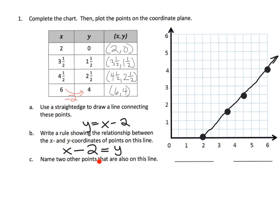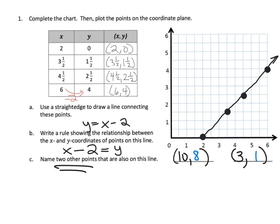We also could have said: start with the y and add two to get x — that would be fine as well. Now let's name two other points that are on the line. We can choose any value for x, then subtract two to get y. Let's make x = 10, so y = 8. And let's choose x = 3, subtract two, and we get y = 1. Those are our two additional points.